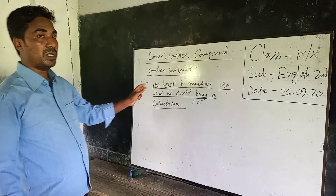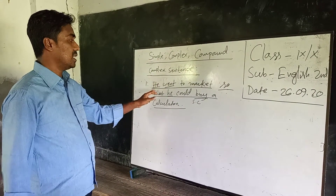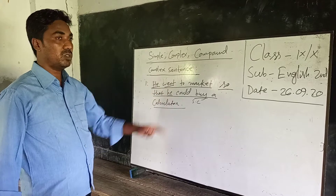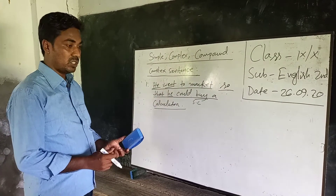In this complex sentence, the subjects are two, the finite verbs are two ('went' and 'could buy'), and the clauses are two — one independent and one dependent.